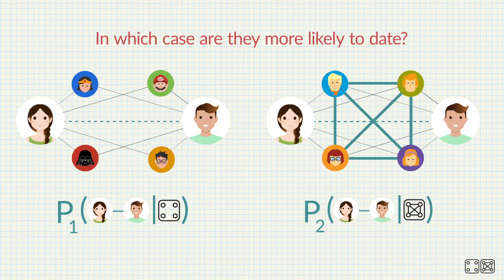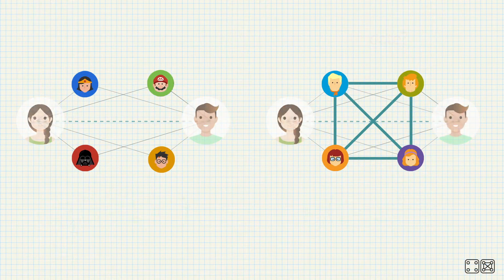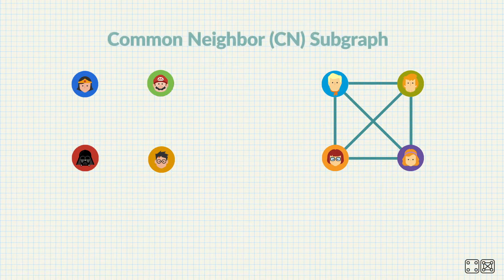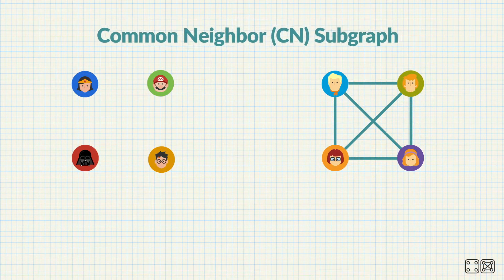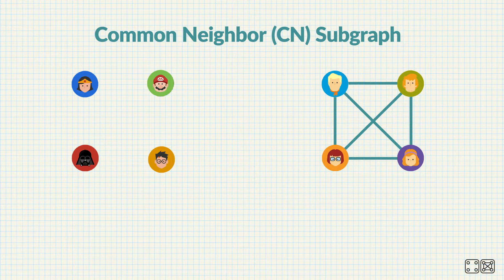In which scenario are Alice and Bob more likely to date? We can start by looking at how Alice and Bob's mutual friends are connected. We call the way these friends are connected Alice and Bob's common neighbor subgraph. Let's see what the common neighbor subgraph can tell us about Alice and Bob dating.